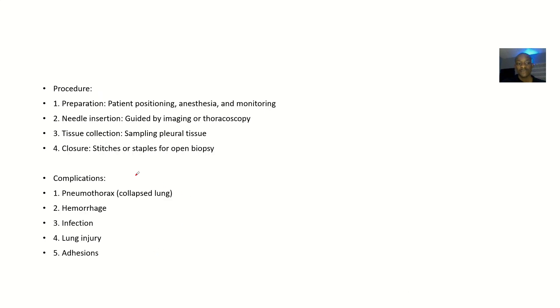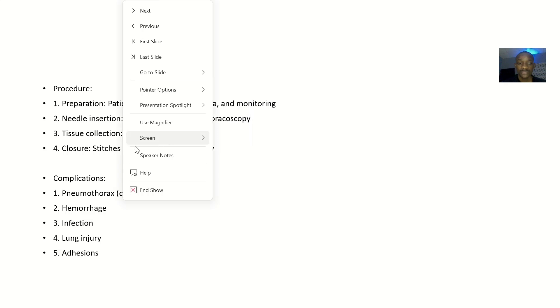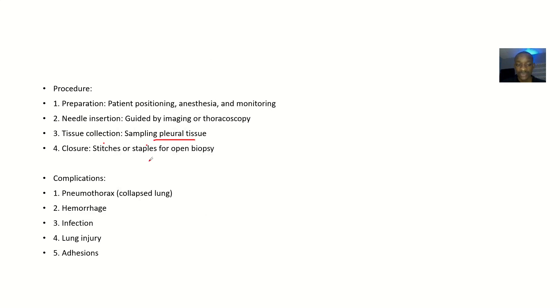For the procedure — how to do a pleural biopsy: preparation involves positioning the patient well and giving them anesthesia, then monitoring them. Anesthesia is given because you are penetrating them — it's actually a painful procedure, so you give anesthesia to prevent the pain. Next is tissue collection, where you sample the pleural tissue. After you are done, you close with stitches or staples — that's if you did an open biopsy.